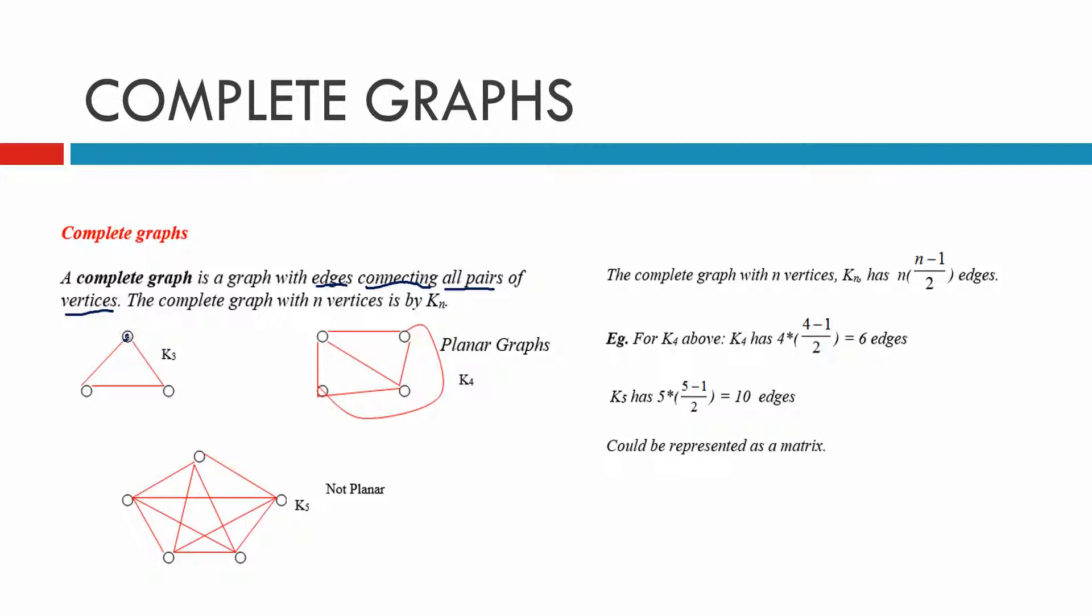So here we go, this one here is k of 3. It's a complete graph that has three vertices, k of 3. This next one over here, there are four vertices, 1, 2, 3, 4. So it's known as k of 4. It's a planar graph as well, these two.